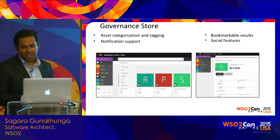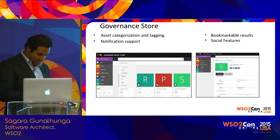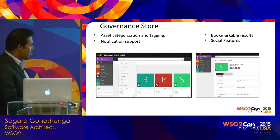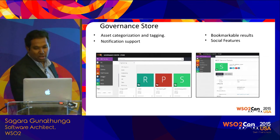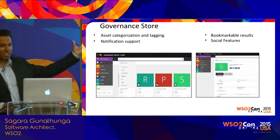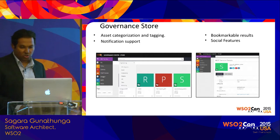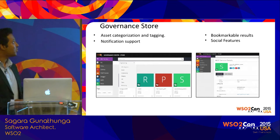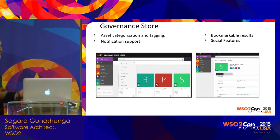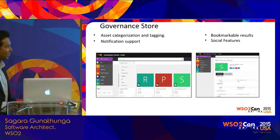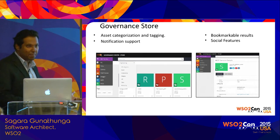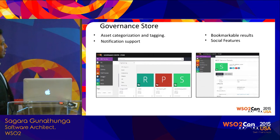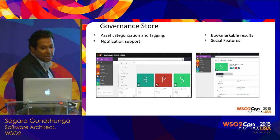All these result pages are bookmarkable — you can bookmark a page and send it by email. We have also enabled social features, because the Governance Store is mainly intended to promote or sell your digital assets. For example, if you are targeting the general public, you can use these social features to promote your services and APIs.